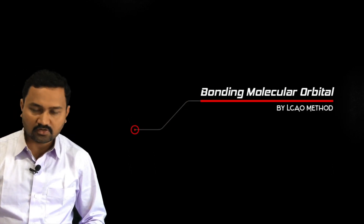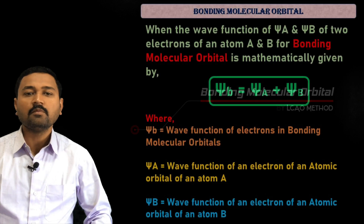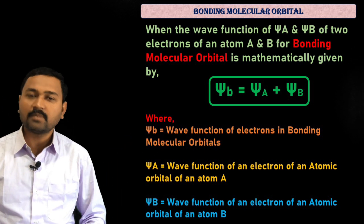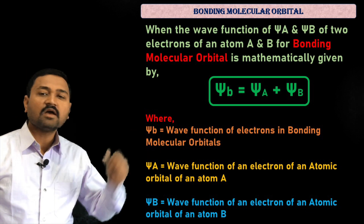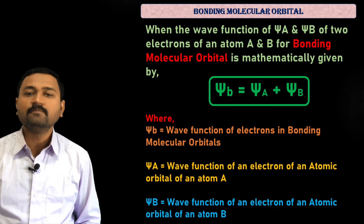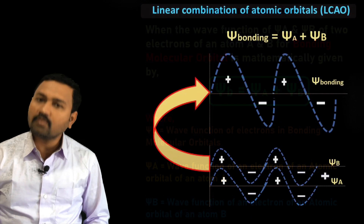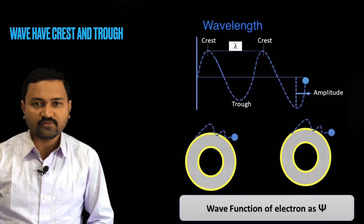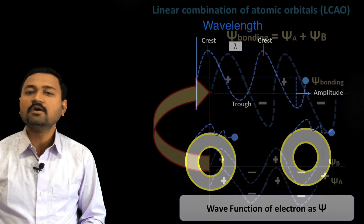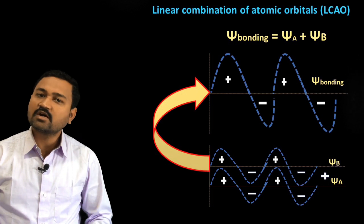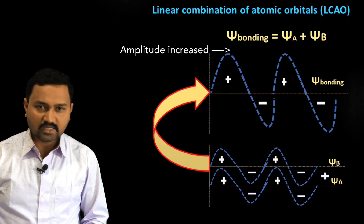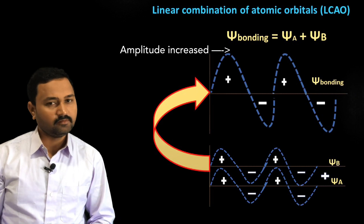For the bonding molecular orbital, the wave function is mathematically given as: psi_b = psi_A + psi_B, where psi_b is the bonding molecular orbital — it is the addition of the two wave functions of the electrons of combining atoms A and B. We know that waves have crests and troughs, so during the formation of the bonding molecular orbital, the crest of one wave combines with the crest of another wave of the two combining atoms, and the resulting amplitude increases.